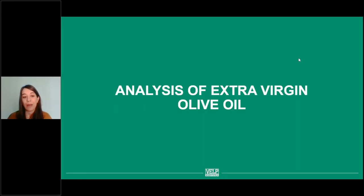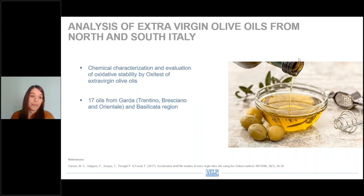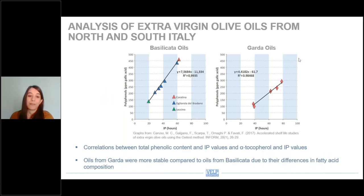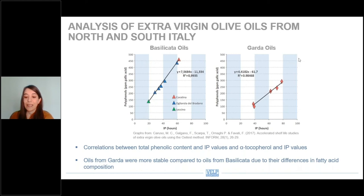As a last example, I'm going to show you a result relating to the use of Oxytest on extra virgin olive oil. A chemical characterization and evaluation by Oxytest was made on different extra virgin olive oils from the Garda area in northern Italy and some oils from Basilicata. In both cases, we saw that the polyphenol content was strongly related to the induction period of the product — there was a positive correlation between total phenolic content and IP values, and also with alpha-tocopherol content. All in all, oils from Garda were more stable compared to oils from Basilicata due to differences in fatty acid composition. This data confirmed that the presence of antioxidant compounds such as polyphenols helps to prevent the oxidation of a product.